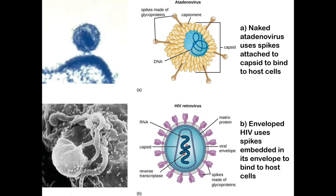At the bottom you have an enveloped virus — the HIV virus — which is surrounded by the lipid envelope. This uses the spikes embedded in the envelope to bind to host cells.